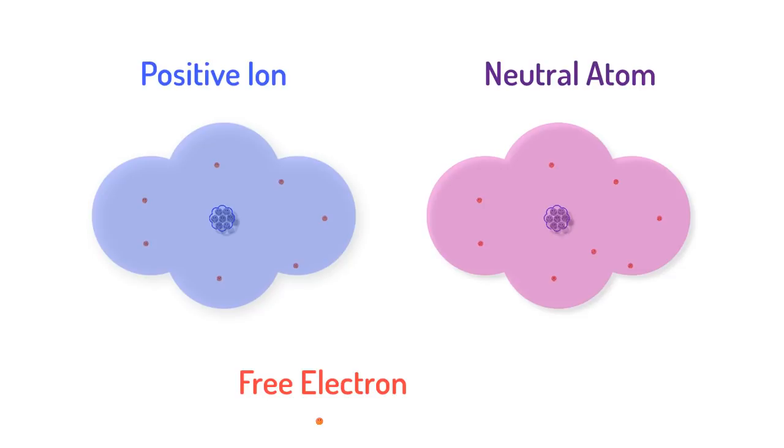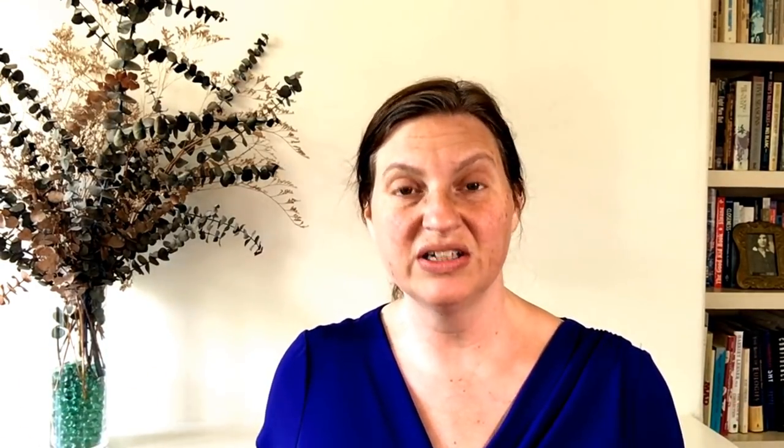To recap, electricity depends on negative tiny free electrons that aren't stuck to any particular atom and heavy positive ions or atoms that have lost an electron or two. Current is made of flowing electrons. That's all current is.